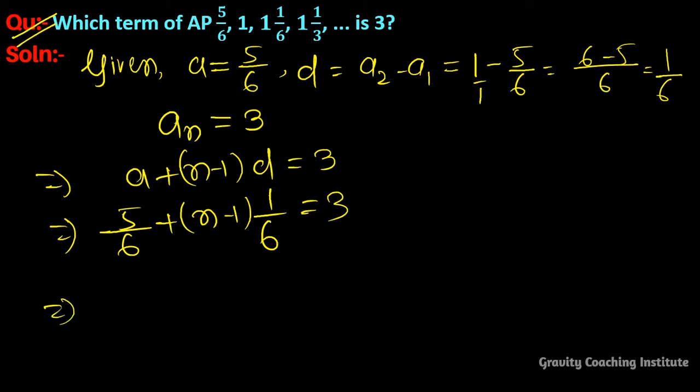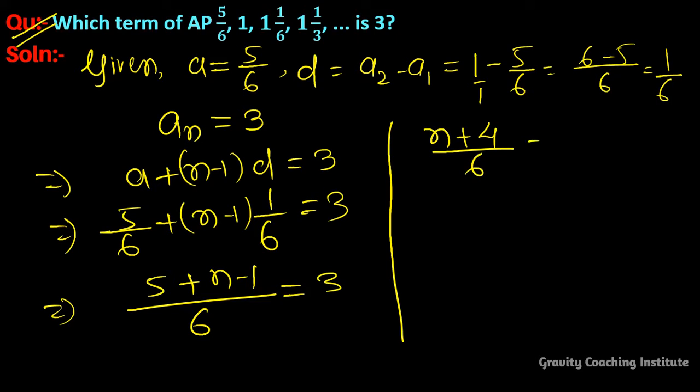Now we take the same denominator, so 5 plus (n-1) equal to 3 times 6. So (n+4)/6 equal to 3. And after cross multiplication we get n plus 4 equal to 18.